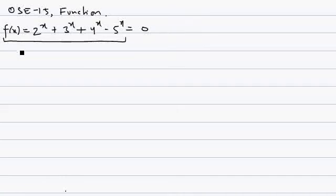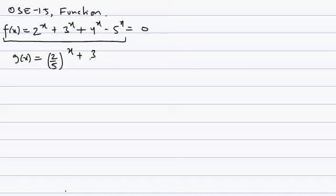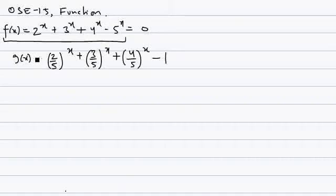We divide both sides by 5^x, defining g(x) instead. So g(x) = (2/5)^x + (3/5)^x + (4/5)^x - 1. The number of roots of this equation is the same as the number of zeros of g(x), or the points of intersection of g(x) with the x-axis.